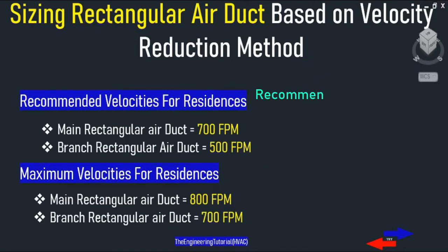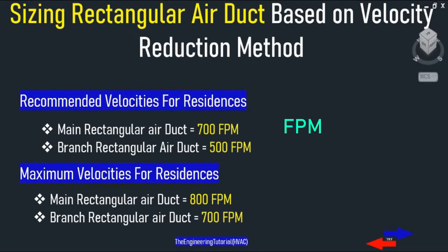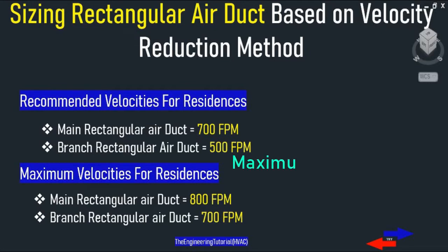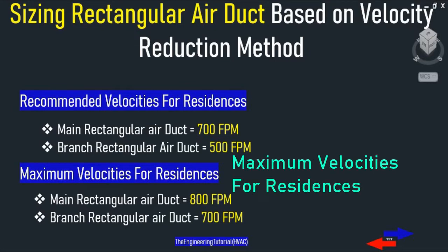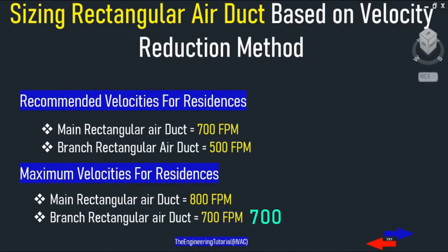The recommended velocity for residential main rectangular air duct is 700 FPM. The maximum velocity for residential main rectangular air duct is 800 FPM, and 700 FPM for branch duct.